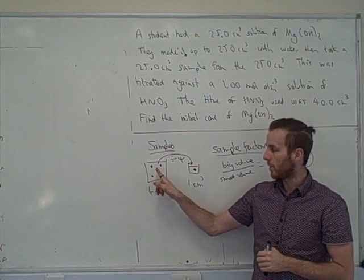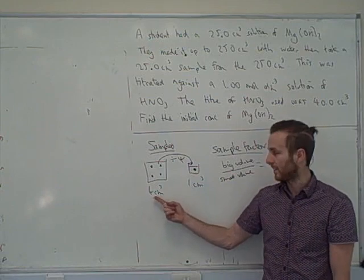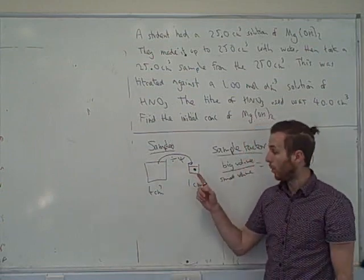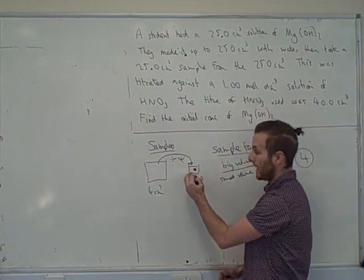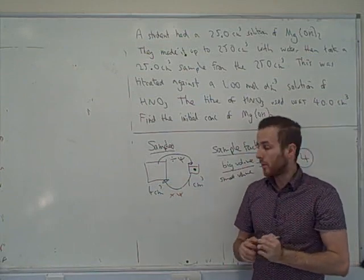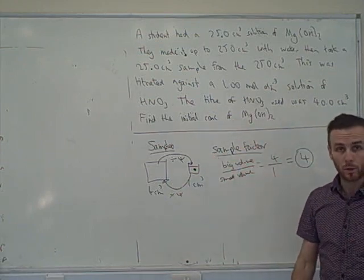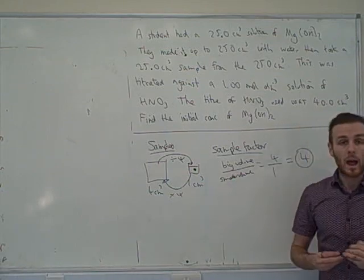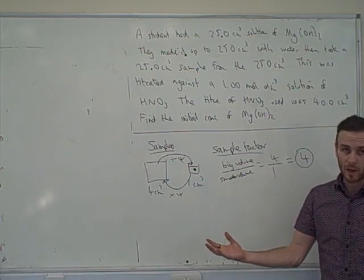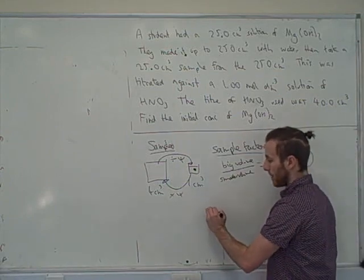In exams you'll mostly work backwards. The question will say you start with 4 cm³ and take a 1 cm³ sample — you figure out the moles in the 1 cm³ sample and need to get back to the 4 cm³. So you multiply by four. When dealing with samples: first calculate the sample factor (bigger volume over smaller volume), then decide whether to multiply or divide. Going from small to big — multiply. Going from big to small — divide.